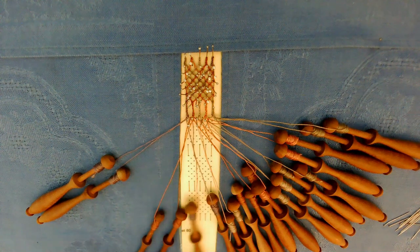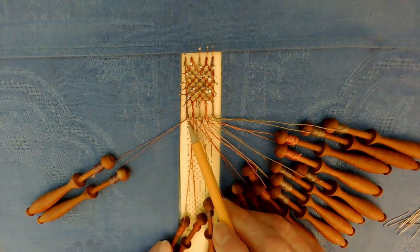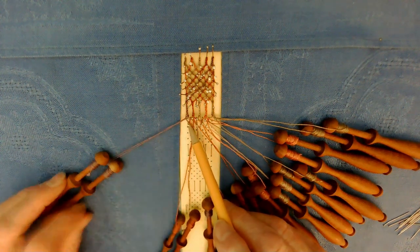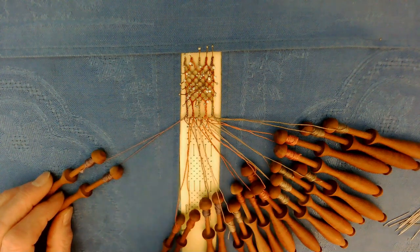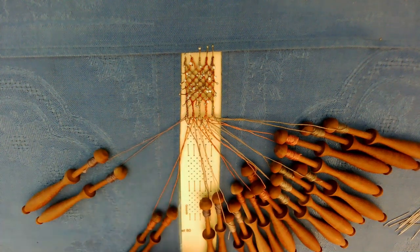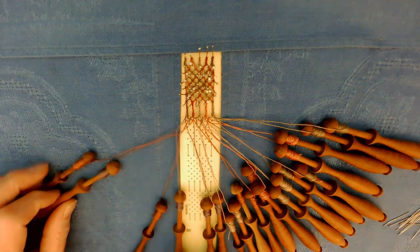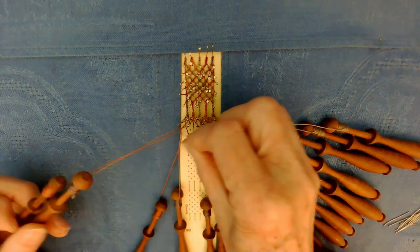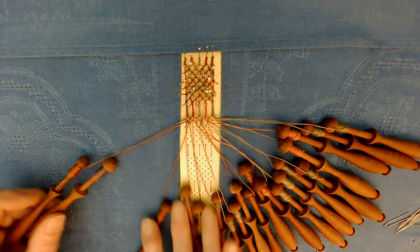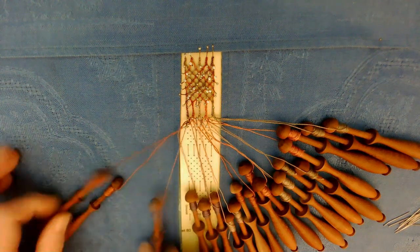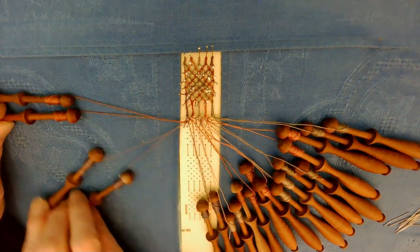Moving down to the next row, we find the pinhole is on the outside. We need the pair from the outside and the pair from the first pin. Cross, twist, pin in that outside hole, cross, twist, twist. Move them to the side.